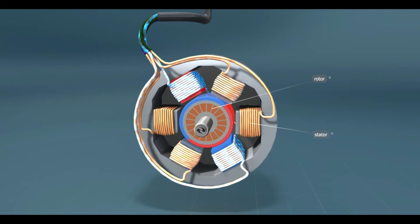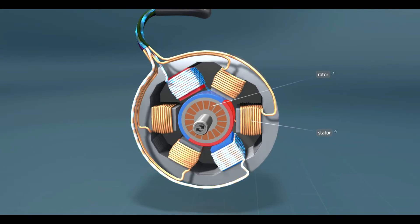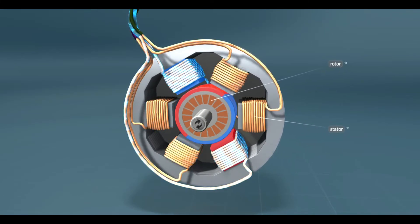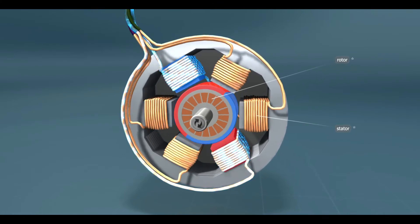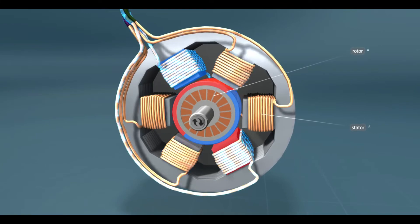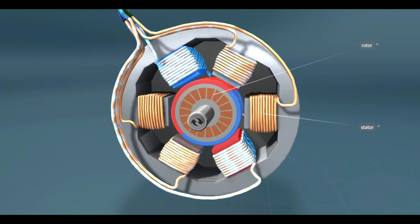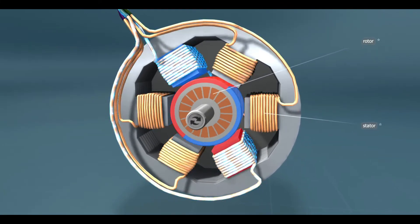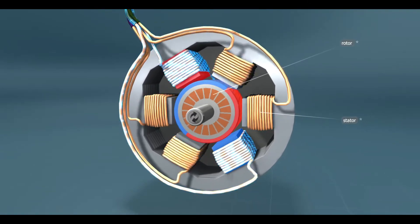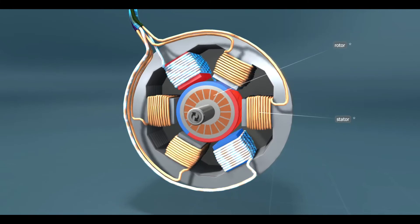This rotating magnetic field induces an electric current in the rotor. The induced electric current generates another magnetic field around the rotor. The two magnetic fields interact with each other, so the rotor tries to align itself with the external magnetic field. However, since the magnetic field rotates, the rotor can never catch up with it, so it constantly revolves.